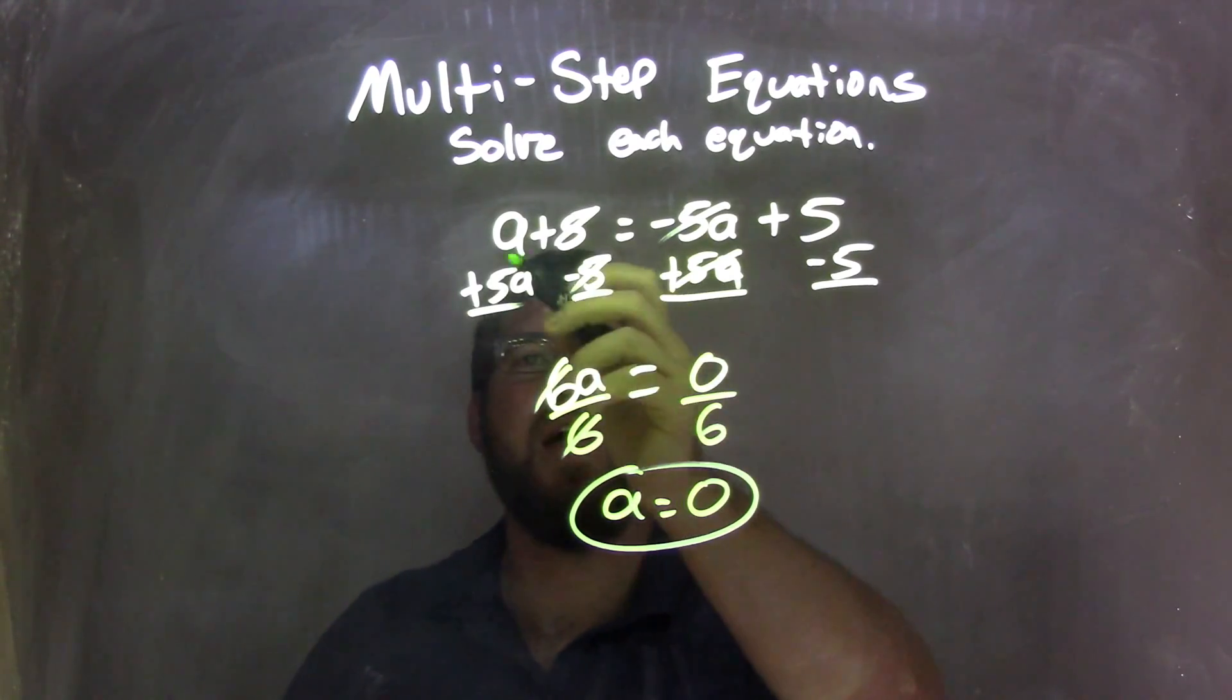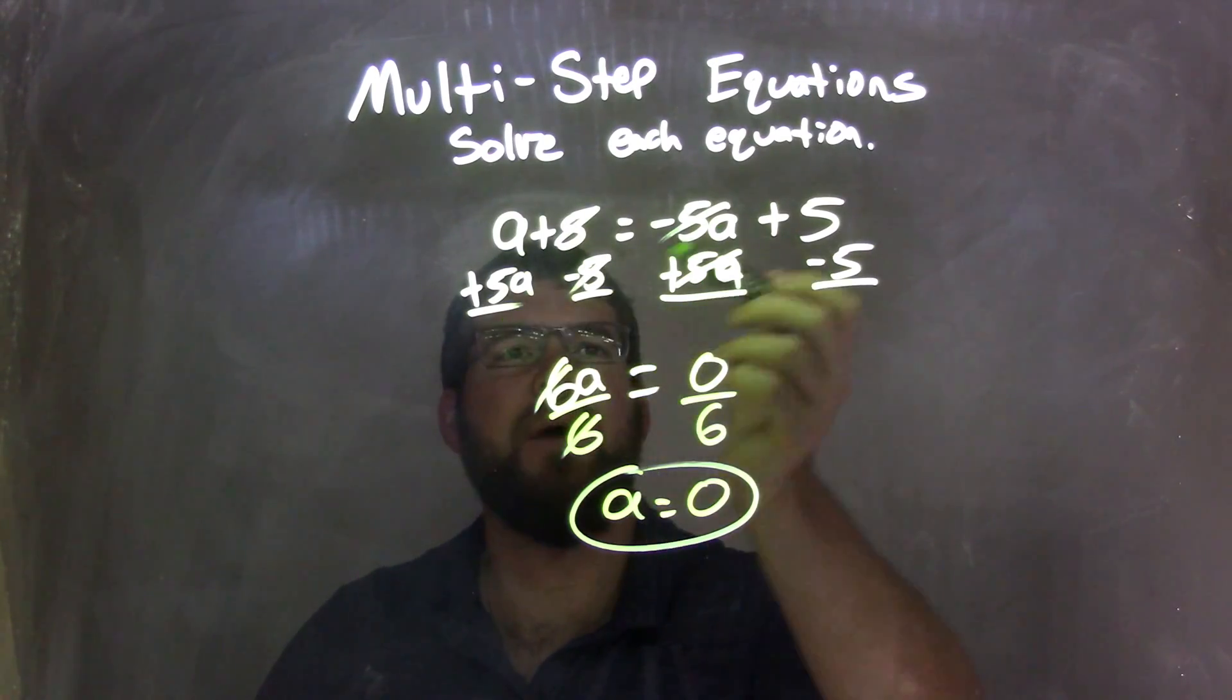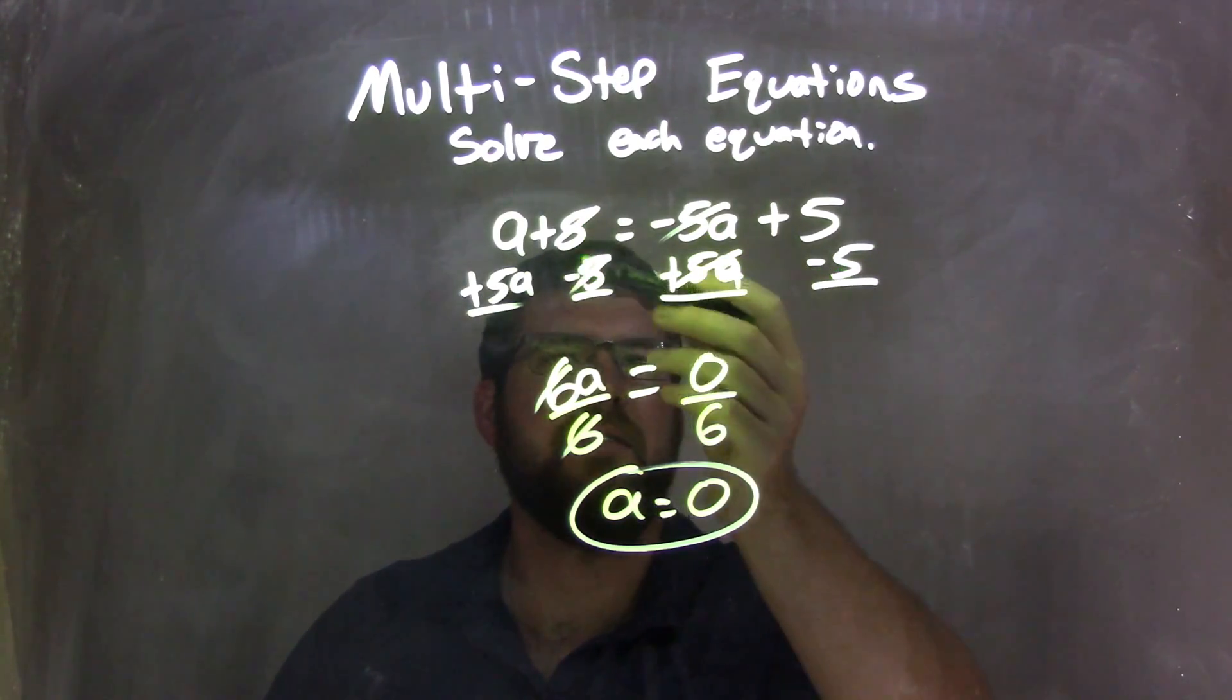So let's recap. We started with A plus 5 equals negative 5A plus 5. I brought the 5A to the left here by adding 5A to both sides. I subtracted 5 to both sides, bringing this 5 here to the right.